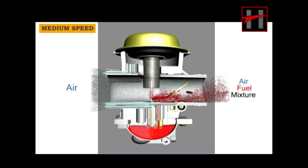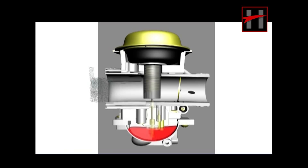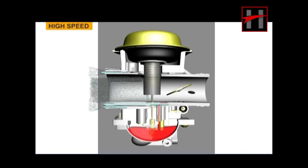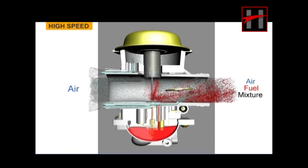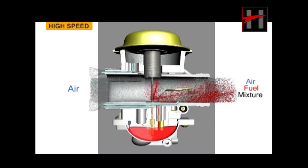Air enters the main circuit through an air passage and is controlled by the main air jet. The controlled amount of fuel is sucked into the mixing chamber through the main jet, where it gets mixed with the air. Finally, the controlled amount of mixture is fed into the engine. The regulation of the mixture is done by the jet needle and the needle jet. The jet needle closes the needle jet when the piston valve is in the closed position.